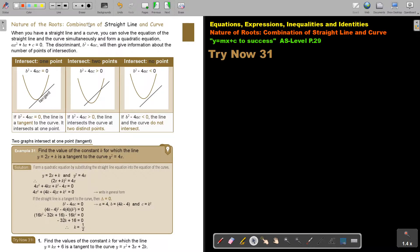The nature of the roots, a combination of a straight line and a curve. When you have a straight line and a curve, you can solve the equation of the straight line and the curve simultaneously, like I showed you in the previous video, and form a quadratic equation. The discriminant, B squared minus 4AC, will then give information about the number of points of intersection. After you form this one equation, you work out the discriminant, and that will tell you how it will intersect.